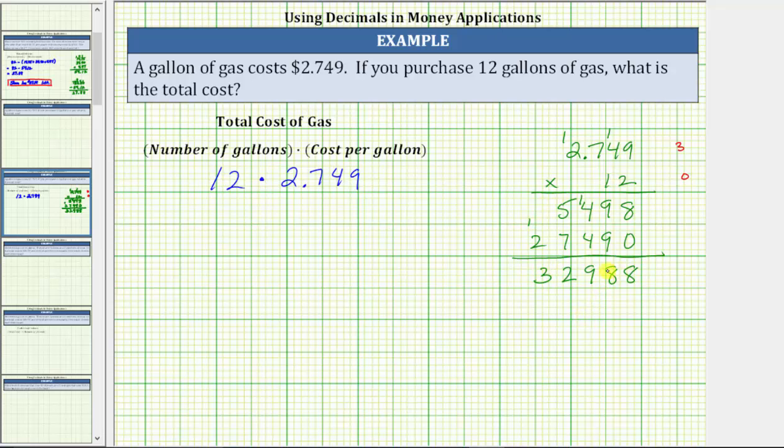Again, the product must contain three decimal places. So starting on the right, you move the decimal three places to the left. One, two, three, giving us a product of 32.988.